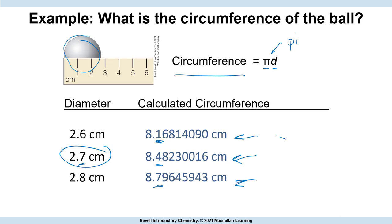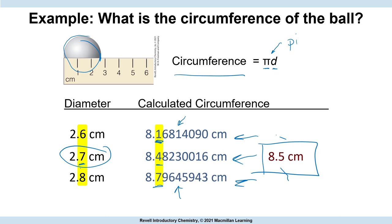One answer came out to 8.4, another 8.5 if we round up, then 8.2 and 8.8 for the others. Using 2.7 as our diameter we get 8.5. As you can see, we started with two sig figs and we end up with two sig figs in our answer.